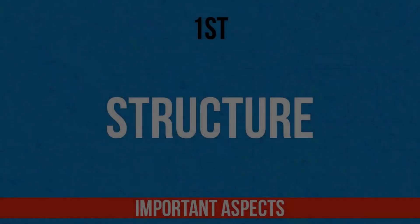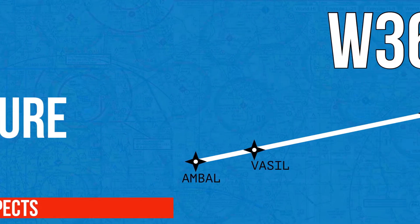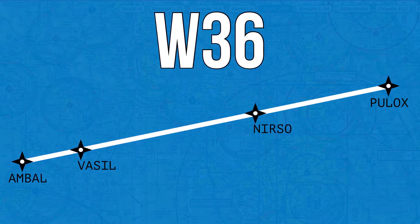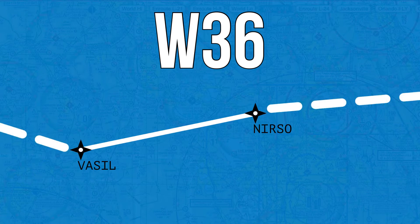Before we get into how to load airways, let's first review four important aspects. First, for flight planning purposes, airways consist of an entry waypoint and an exit waypoint. Because airways are made of many waypoints, the entry and exit ones are the ones you choose — they don't have to be the initial and final waypoints of that airway. For example, Airway Whiskey 36 goes from AMBOL to DACMO, passing through VASIL, NIRSO, and POLLOX, but you can enter via VASIL and exit on NIRSO. It's perfectly okay.